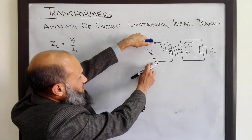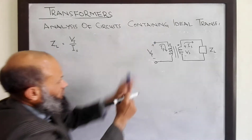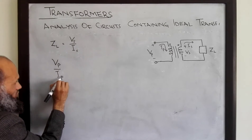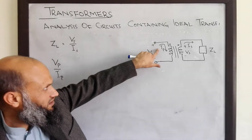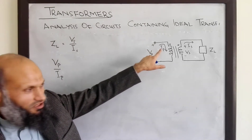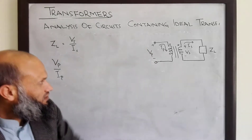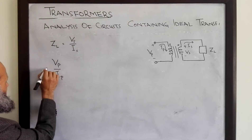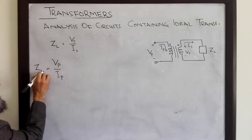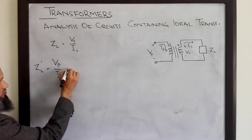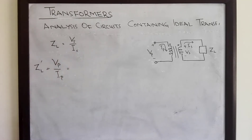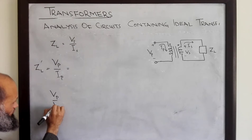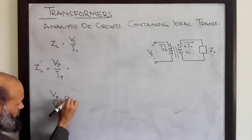The impedance seen by the voltage source is equal to Vp over Ip. The ratio of this voltage and this current equals the impedance seen by the voltage source. Let's call it ZL dash. We know that the primary voltage is related to the secondary voltage by the turns ratio: Vp over Vs is equal to A.